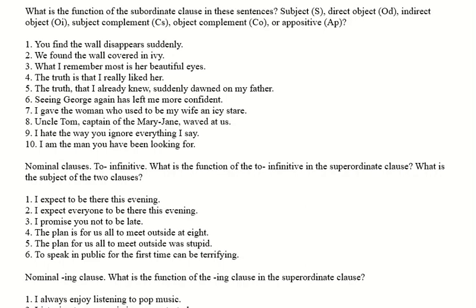Now let's look at some nominal clauses. Nominal clauses stand in for where you would normally expect a noun — so they could be subject, object, or complement. That gives us five different roles: indirect objects, direct objects, two types of complement, plus subject. So there's quite a lot of flexibility. The exercise asks: what is the function of the to-infinitive in the superordinate clause, and what is the subject of the two clauses?